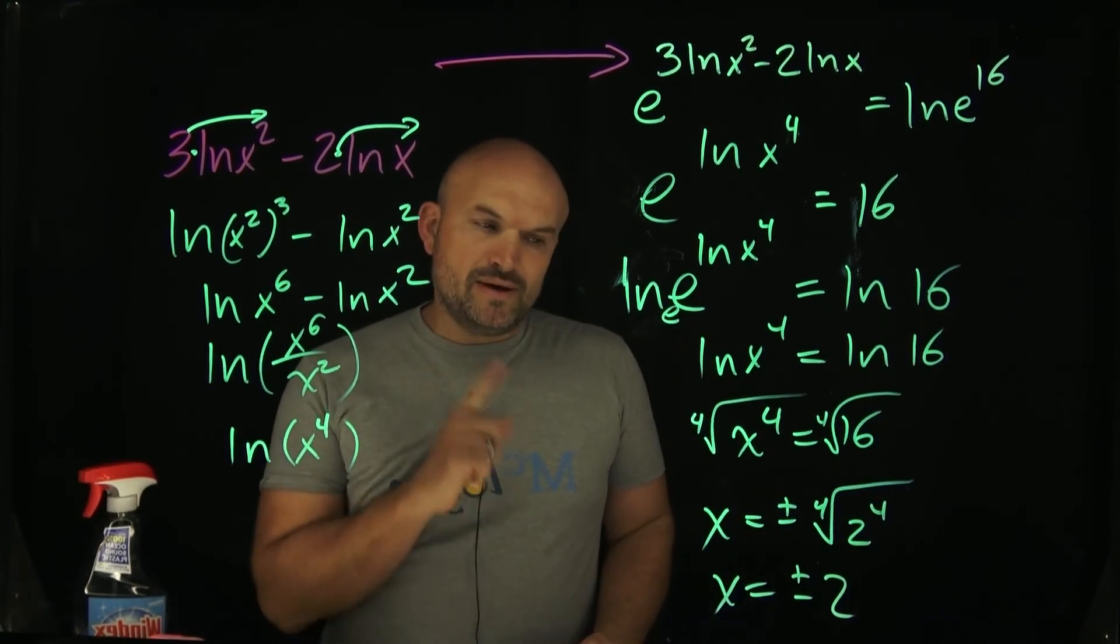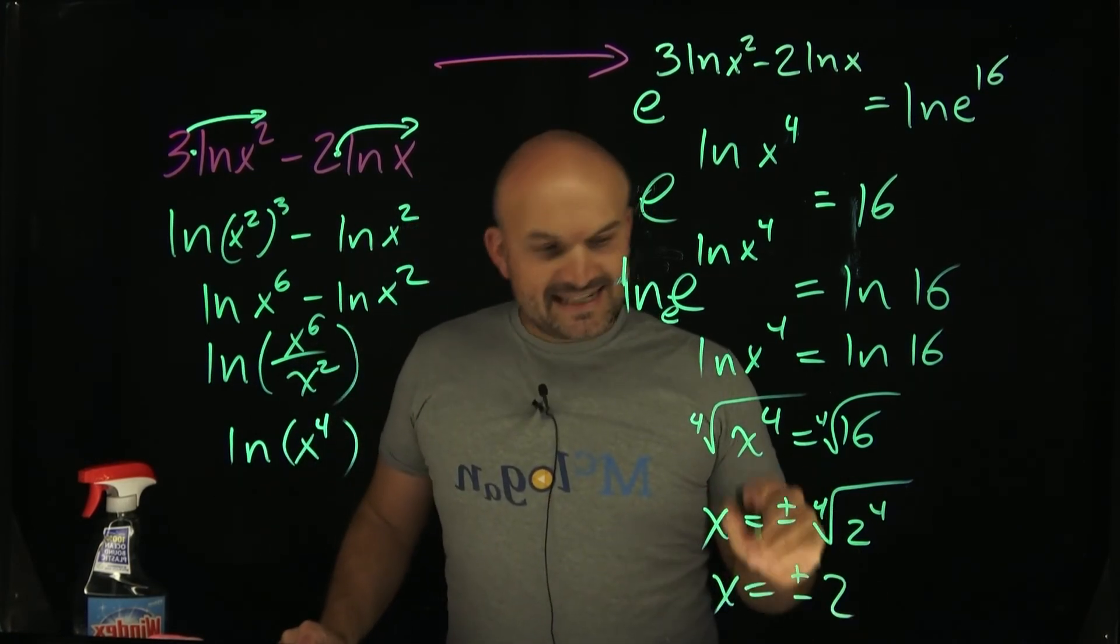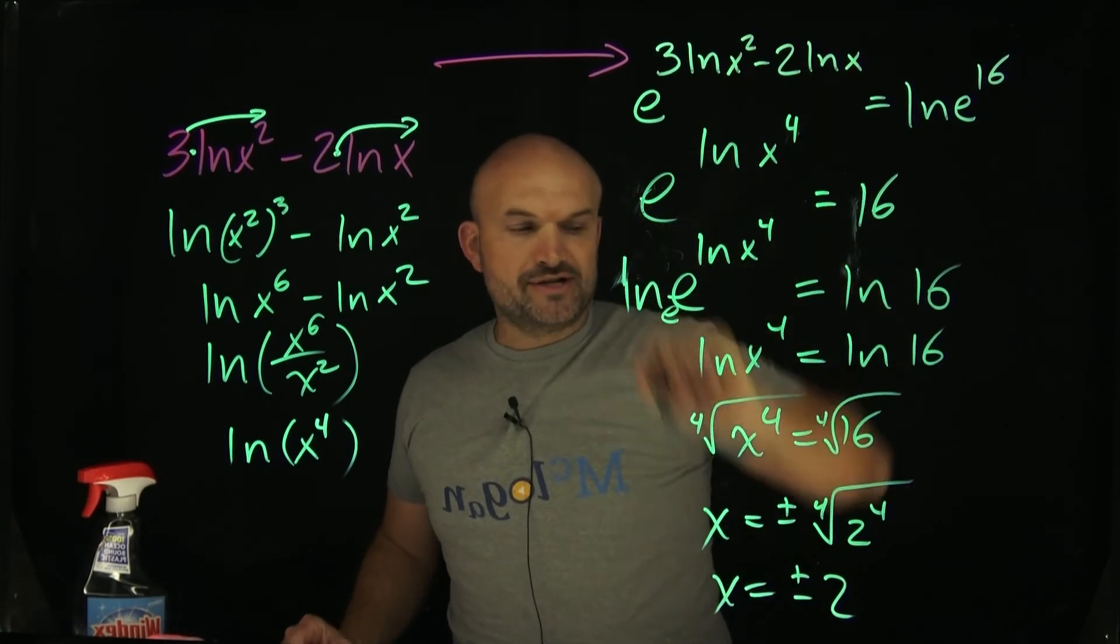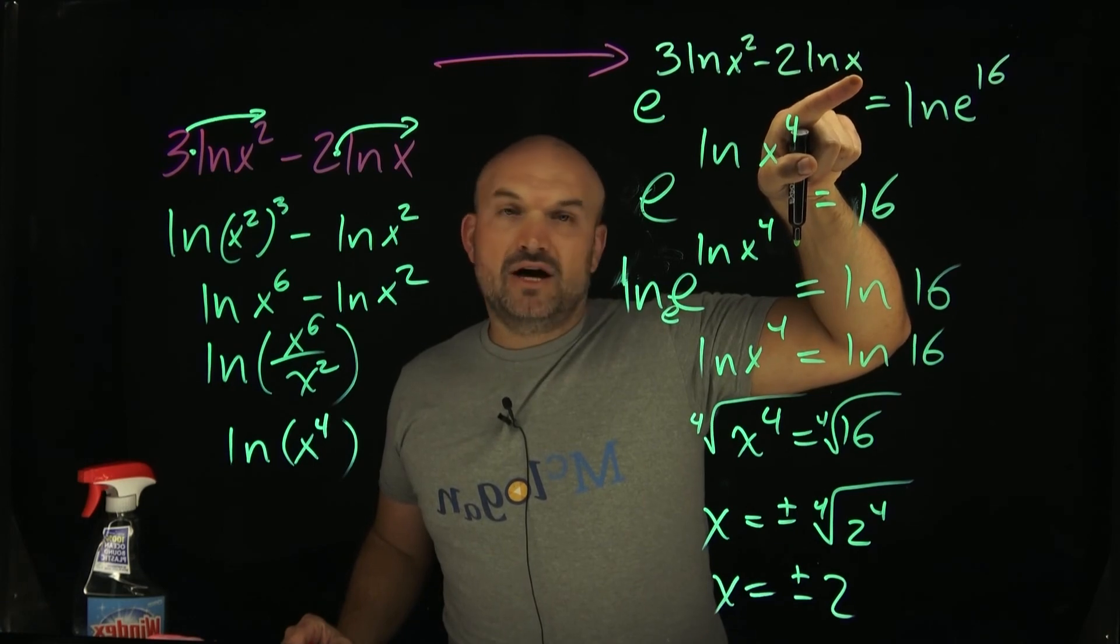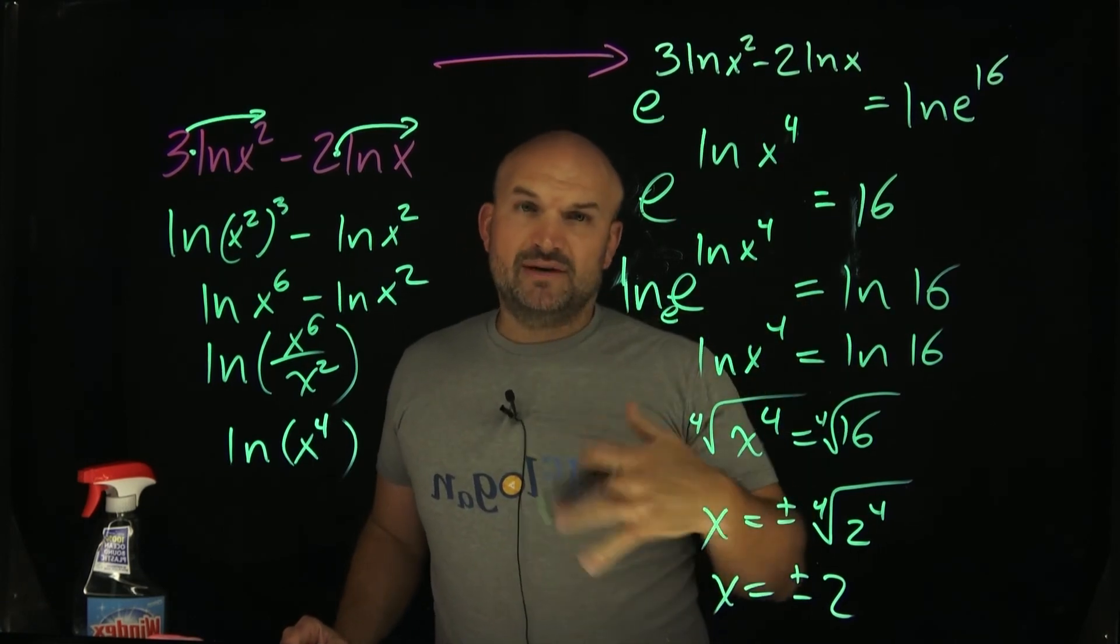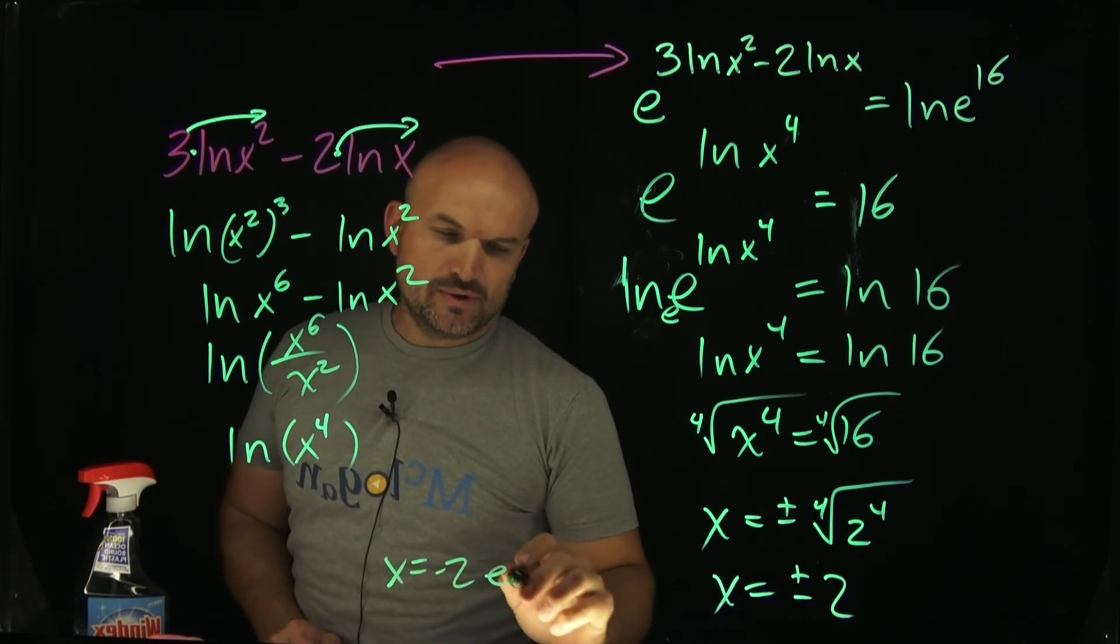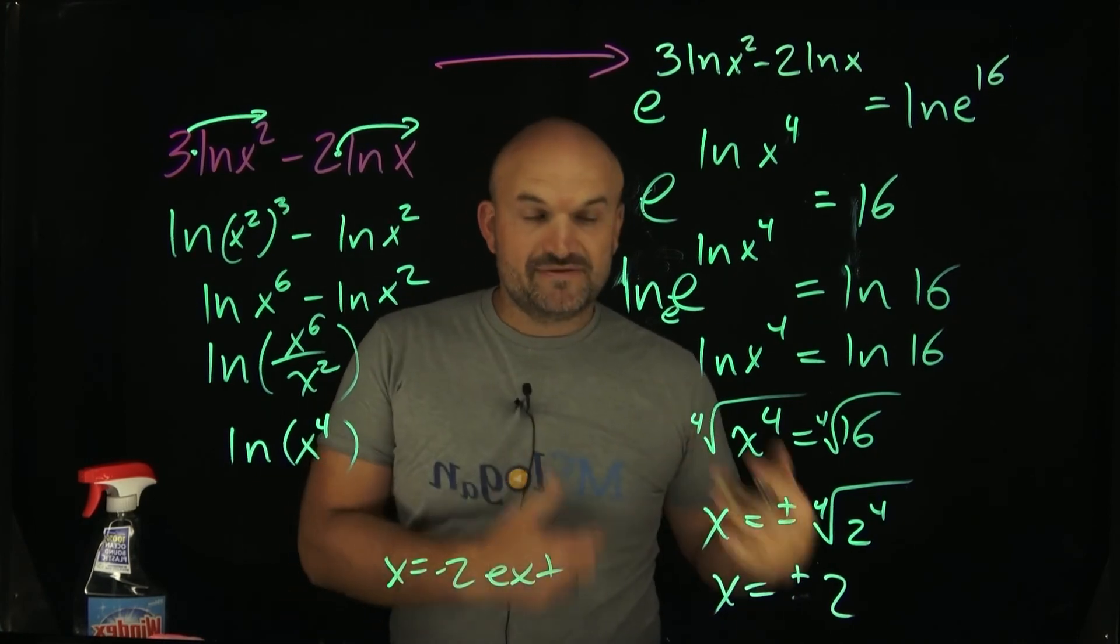But we have to be careful. We always want to check for extraneous solutions. Extraneous solution would mean it's a solution to your final answer, but it's not a solution to your original equation. What I want you to recognize here is negative 2. You cannot plug a negative 2 into the ln of x because you can only take the logarithm of positive values. So therefore, x equals negative 2 is what we call an extraneous solution. So therefore, our only answer in this case is going to be x is equal to a positive 2.